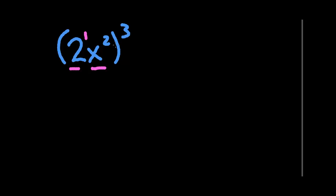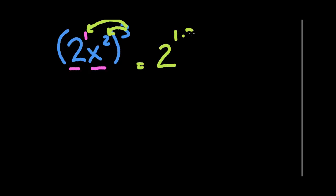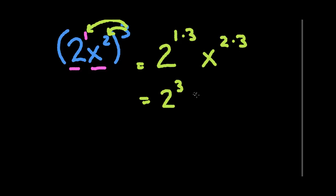Since it's power to a power, we use multiplication. We take the outer exponent 3 and multiply it times each of the inner powers. So we get 2 to the 1 times 3, times x to the 2 times 3. This becomes 2 to the third times x to the sixth, and 2 to the third is 8, so the answer is 8x to the sixth.